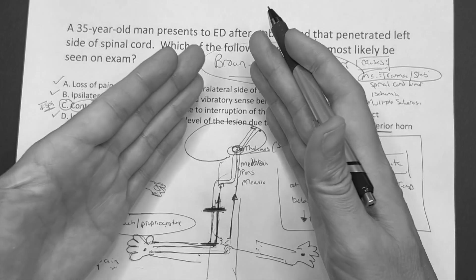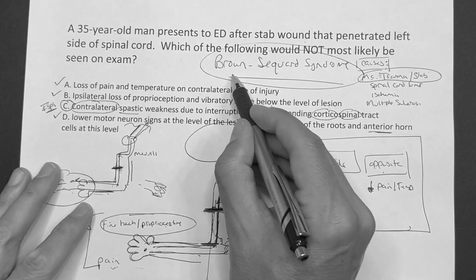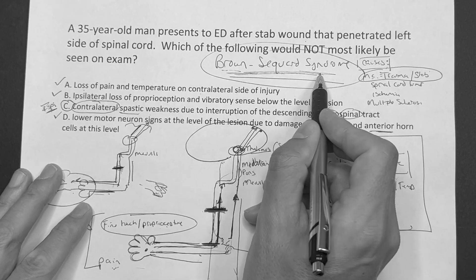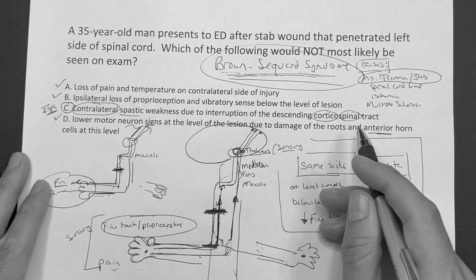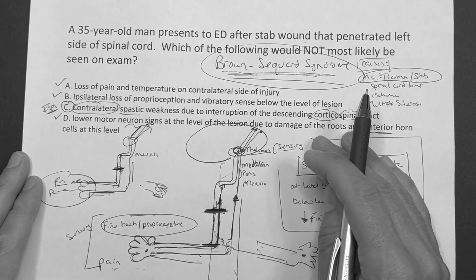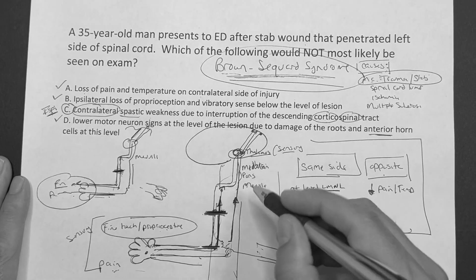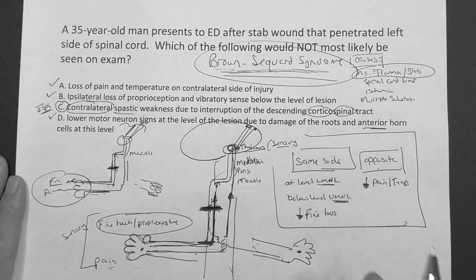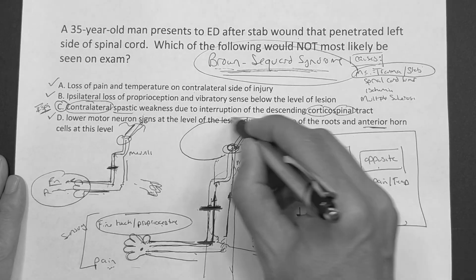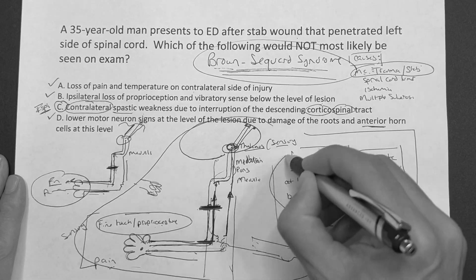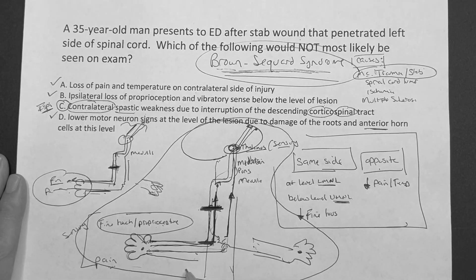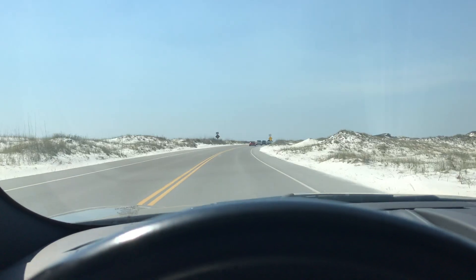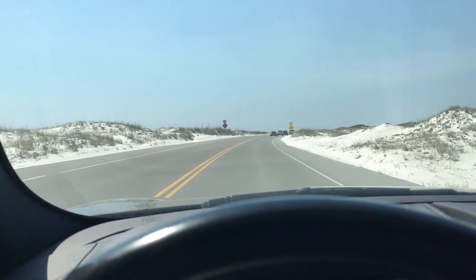If you can get one question right on USMLE that you know, you're going to get a hundred percent. Understand this concept because they want to know that you have the ability to break this down. It's really only three things you have to know. Make sure you can teach it to somebody. Hope it's helpful, guys.